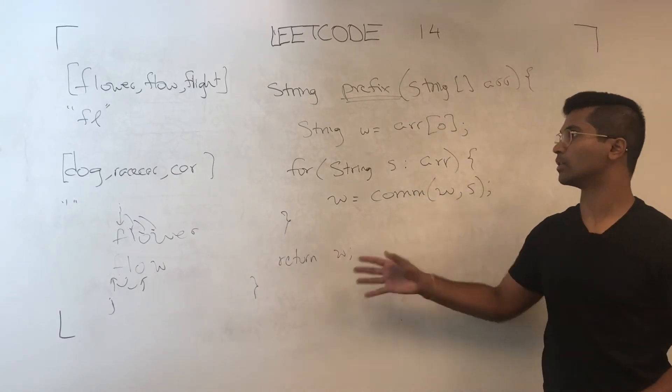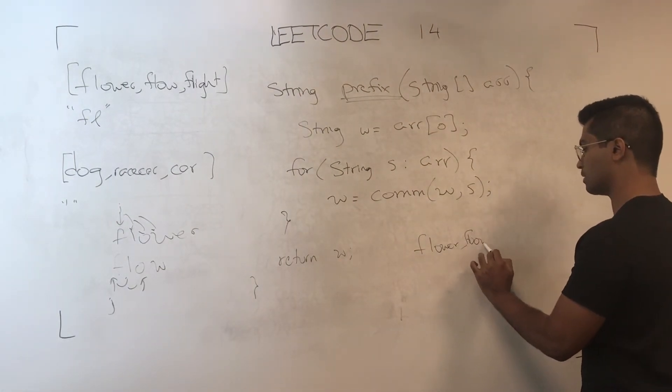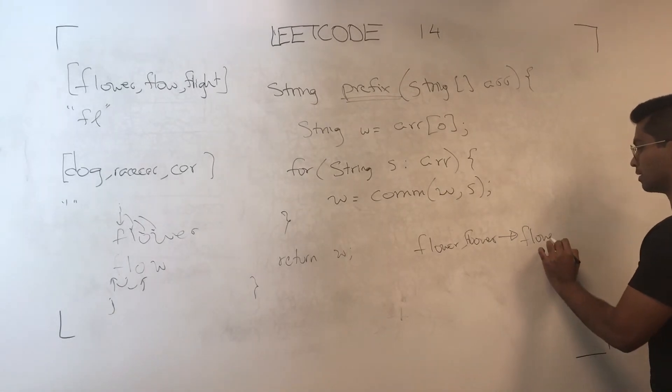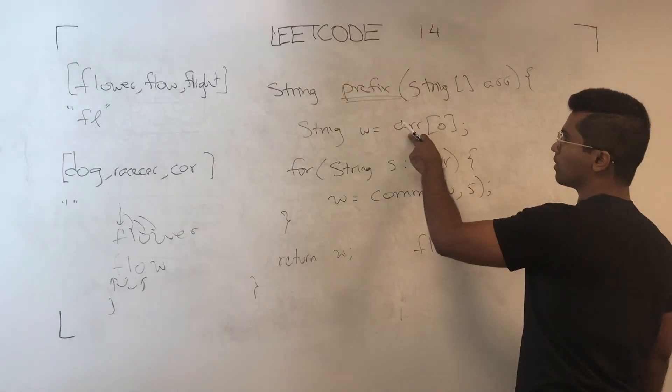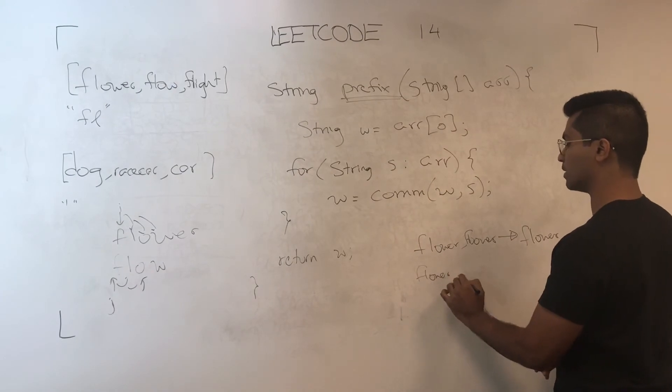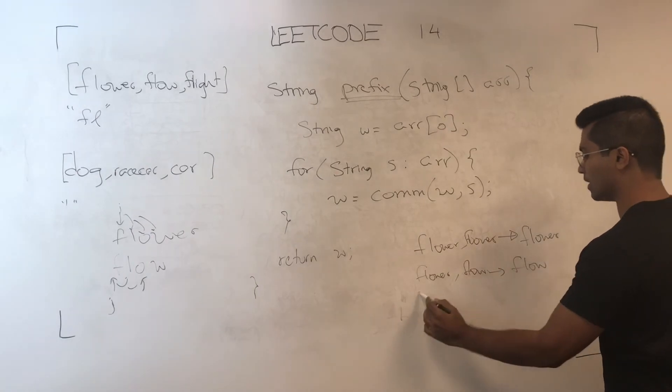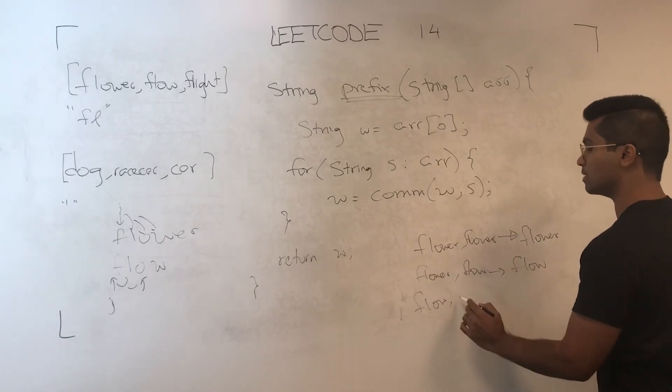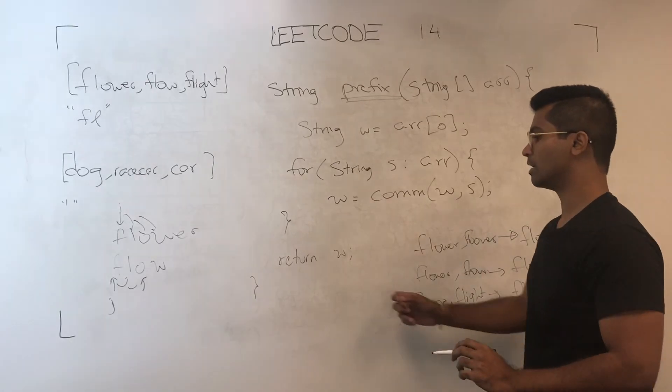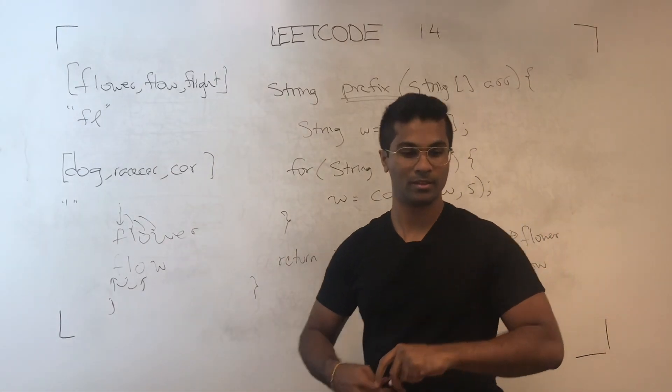Now let me just go over what this is going to look like code-wise. So first it's going to be flower and flower. The common of this is going to be flower. First it's going to be arr of 0 and arr of 0 compared with each other. Now flower is going to be compared with the second one, flow. And the thing that's going to get spit out is flow. Now flow is going to be put in with flight, and we're going to get FL as a return, and that's what we return as w.